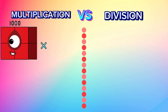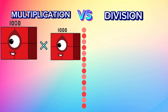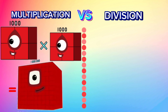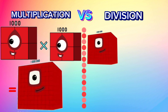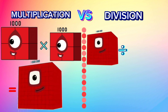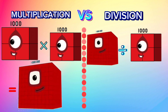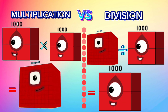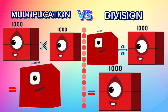1,000 multiplied by 1,000 is equal to 1,000,000. Let's compare it with division: 1,000,000 divided by 1,000 is equal to 1,000.